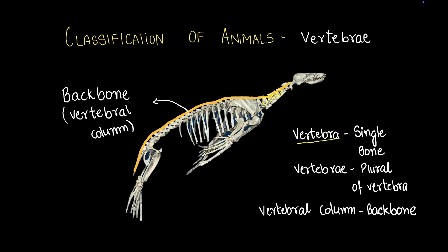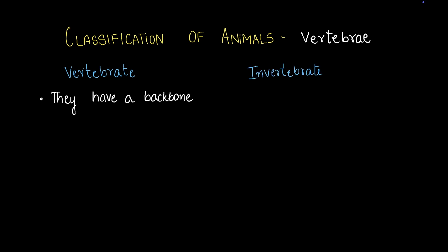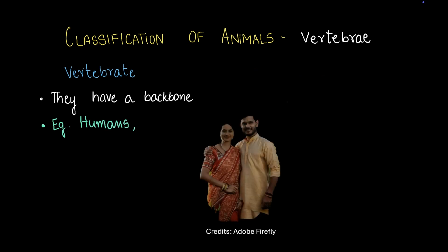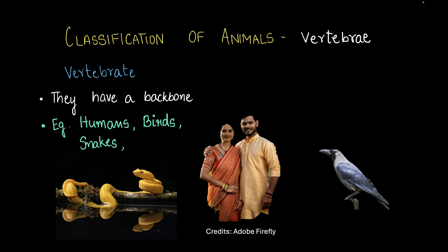Under this classification we've got vertebrates — animals that have a backbone — and invertebrates — animals that do not have a backbone. The best example of vertebrates is human beings. Run your hand across your back and you'll notice that along the center you have a chain of bones — that is your backbone, your vertebral column. Other examples are birds, which have a backbone running through their back, and snakes, which may seem flexible but actually have a string of bones throughout their body.